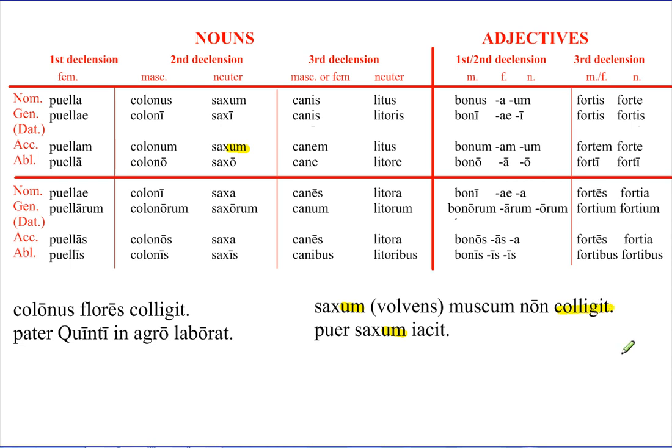Saxum, a rolling stone, doesn't gather moss. Here the boy is throwing a rock. Okay, let's look at a few more. Oh, don't forget, I just wanted to show you one with the genitive that we just learned. Saxi, of a stone. So this means, it's a stone's throw away. It is away by the throw of a stone. So I just wanted to show you the genitive is doing the same, the possessive genitive is doing the same that it did in the previous chapter. The throw of a stone, a stone's throw. It's a stone's throw away.